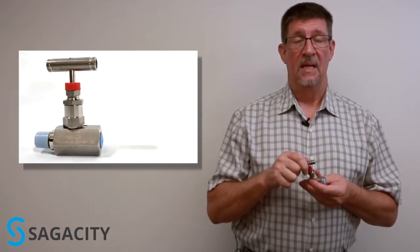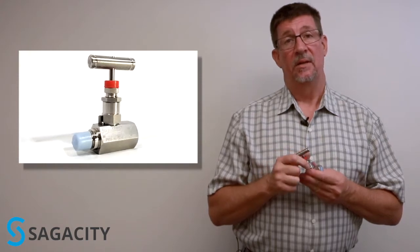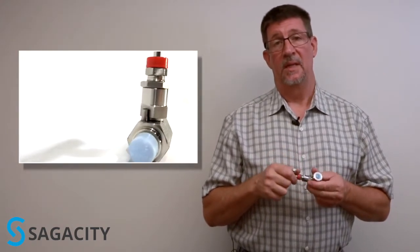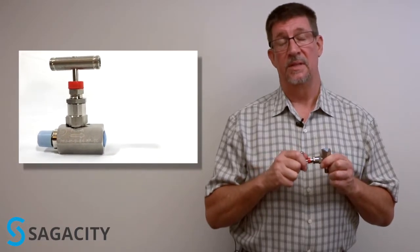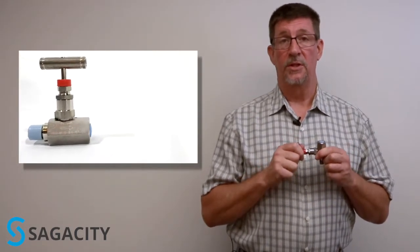Finally, handle type. If you see a T-handle, it's a good indication that this valve is being used as a root valve or a simple on-off valve in an application, say, as a root valve to a pressure gauge.